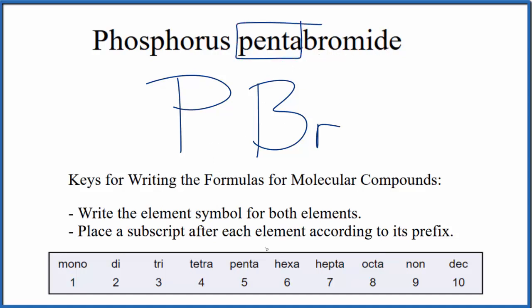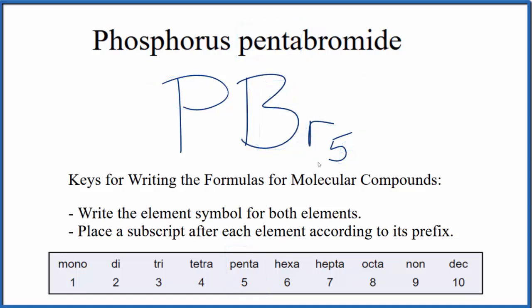we have this penta here. Penta, that means five. So we're going to put a subscript of five. So this is the formula for phosphorus pentabromide, PBr5.